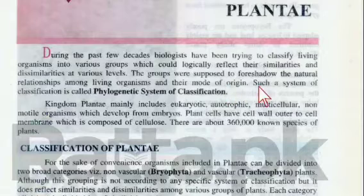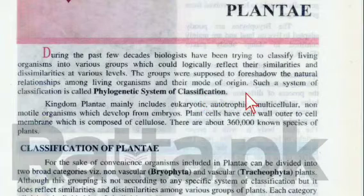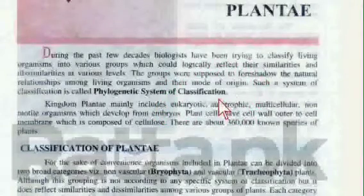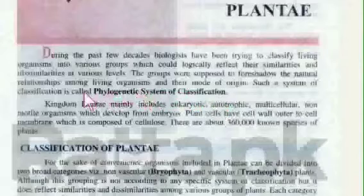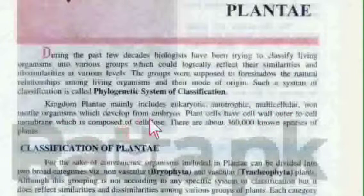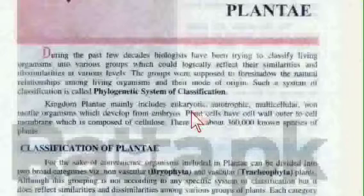The groups were supposed to reflect the natural relationships among living organisms and their mode of origin. Kingdom Plantae mainly includes eukaryotic, autotrophic, multicellular, non-motile organisms which develop from embryos. Eukaryotic means they have a membrane-bound nucleus.